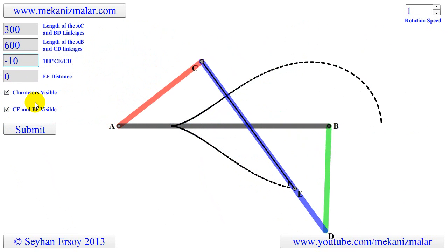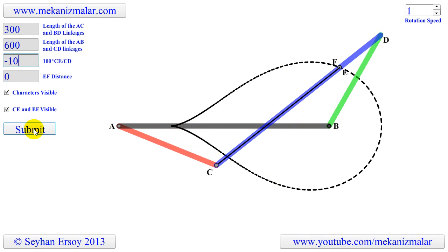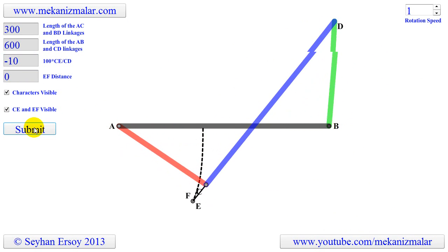We can also make E away from A in negative direction, and this arrangement produces a different shaped coupler curve.